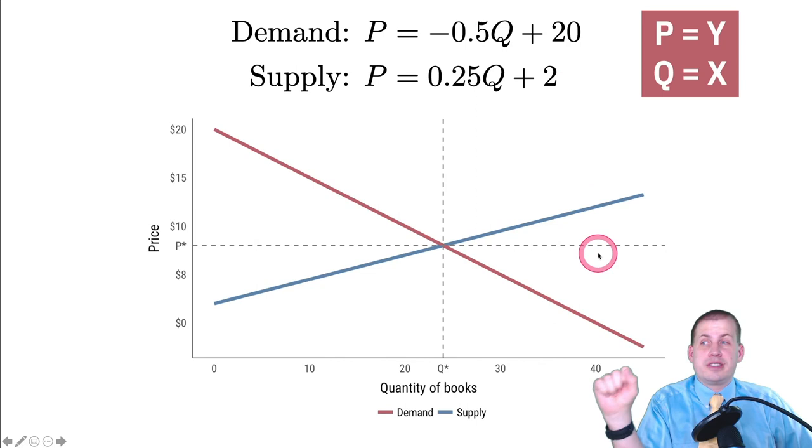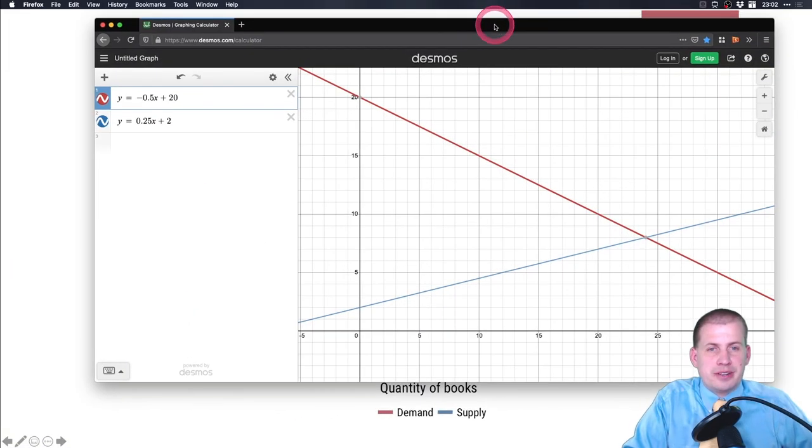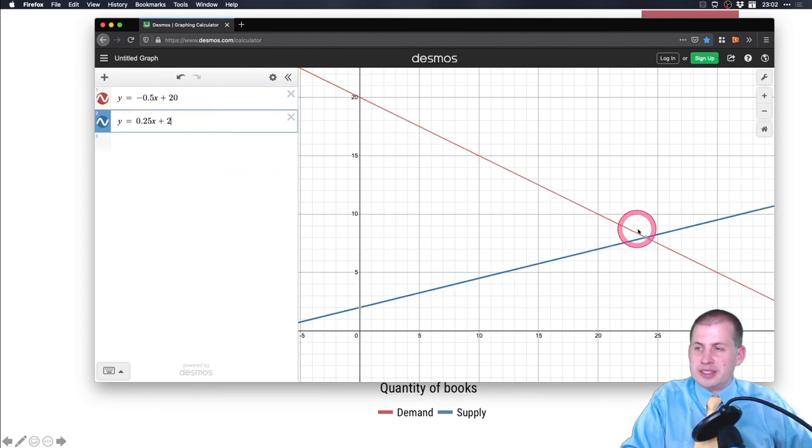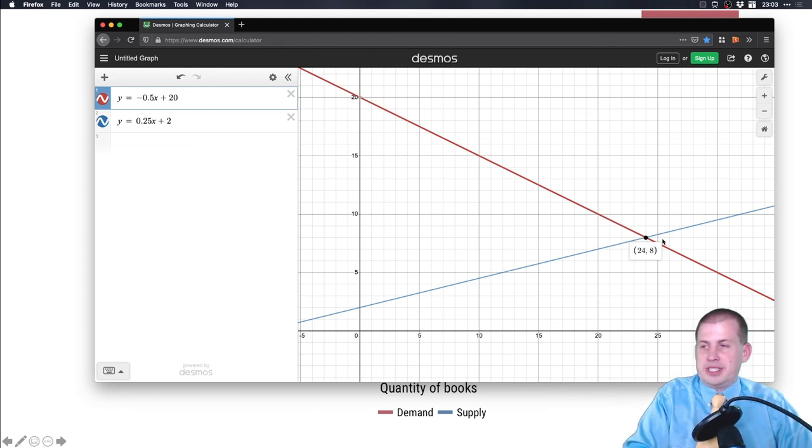The nice thing about that is you can actually plug these things into Desmos because it's y equals something x plus something, and you can find exactly where they cross in Desmos. So if we put these two equations here, this negative 0.5Q plus 20 and the 0.25Q plus 2, we can find exactly where they cross using Desmos. So let's switch over to Desmos really quick. Here's what that graph looks like: here's our demand which is sloping down, and here's our supply that's going up, and they cross right here at 24 and 8. So that means 24 books will be sold in this market and they will be sold for eight dollars each because of the structure of the demand that exists in the world and because of the suppliers and how much they're willing to sell their books for. Based on both of those two real world things, this is what is called the market equilibrium or the clearing price or where the two lines intersect.